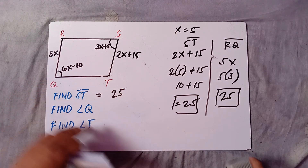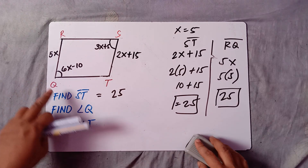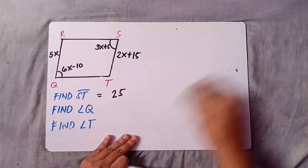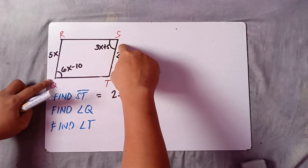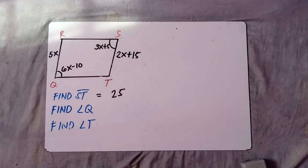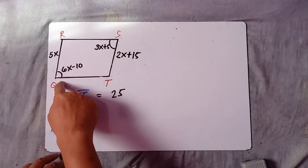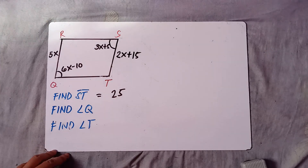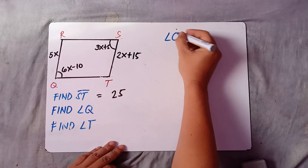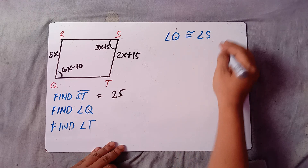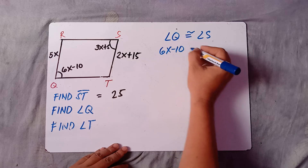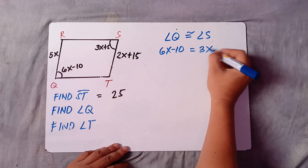Now we find angle Q and angle T. To find angle Q, do not forget that opposite angles are congruent. So angle Q is congruent to angle S. Angle Q is 6X minus 10 and angle S is 3X plus 5.